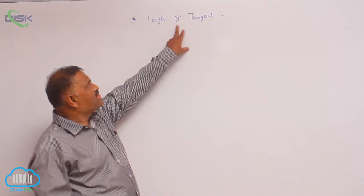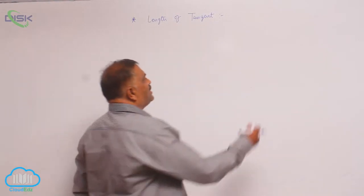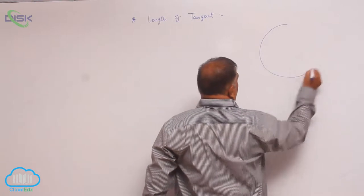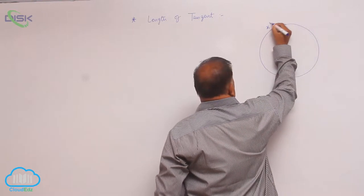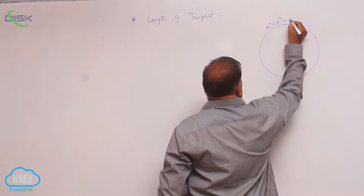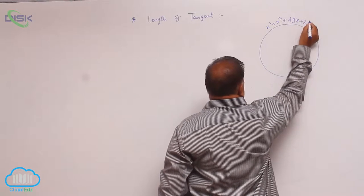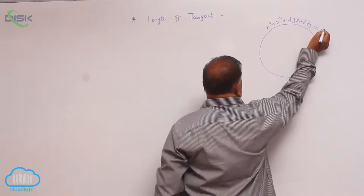We will see the definition of length of tangent. Suppose you take a circle equation x square plus y square plus 2gx plus 2fy plus c is equal to 0.